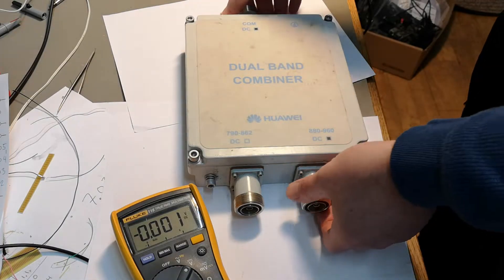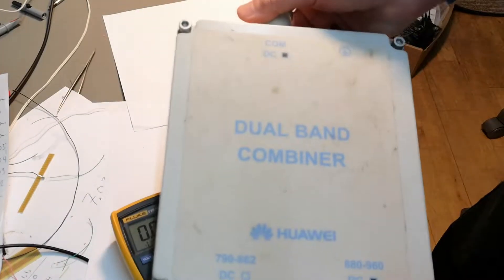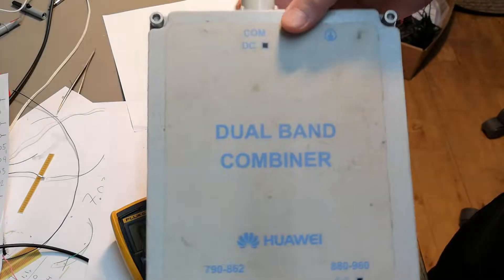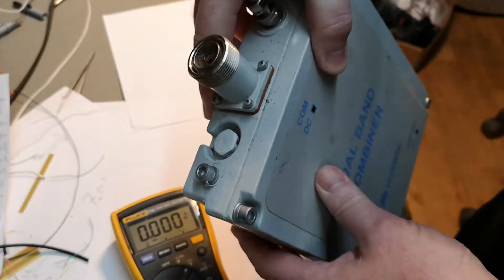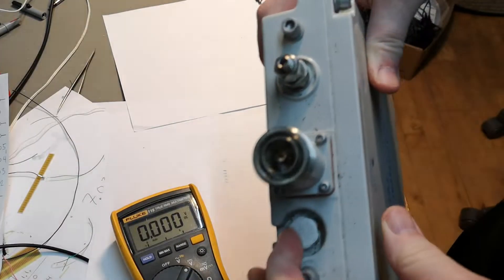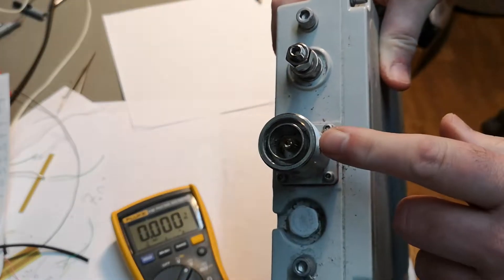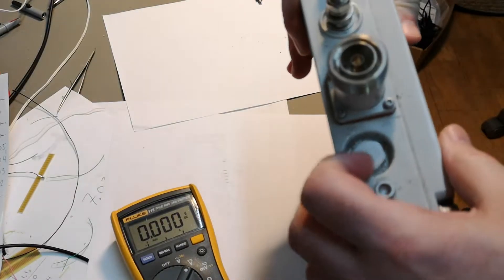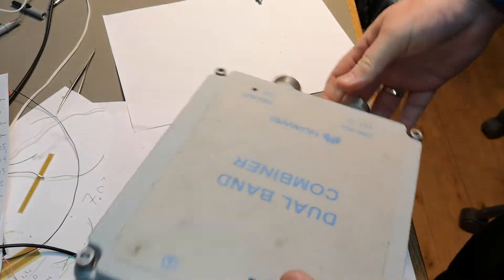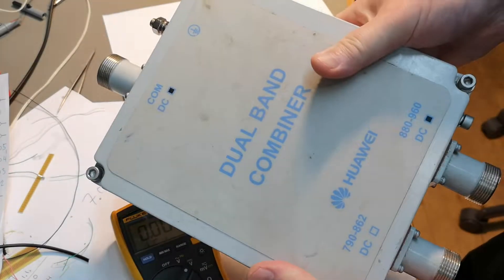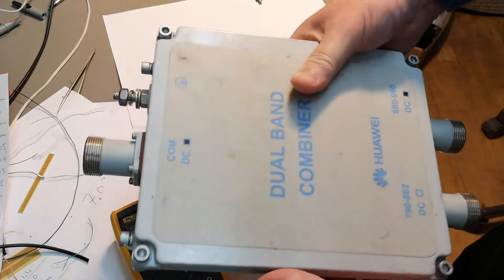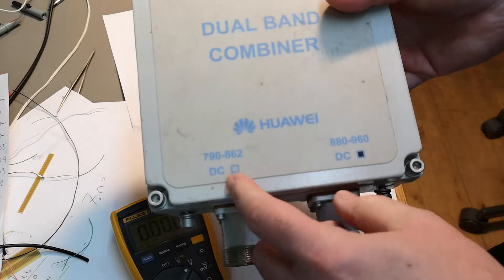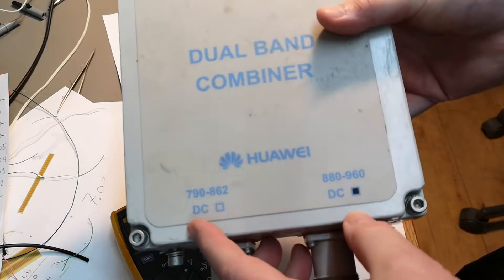Now we're going to have a look at this dual band combiner. It is using 7/16th RF connectors, is really big and heavy so it can handle quite a lot of power. The two different GSM bands.